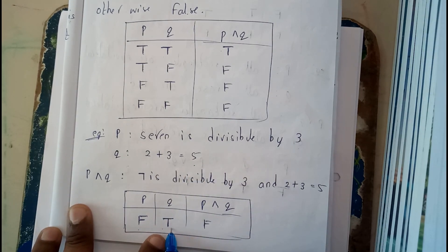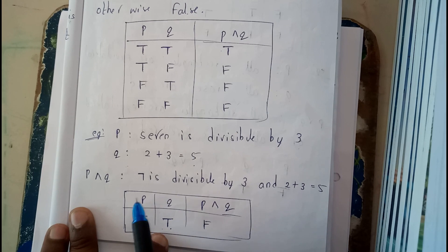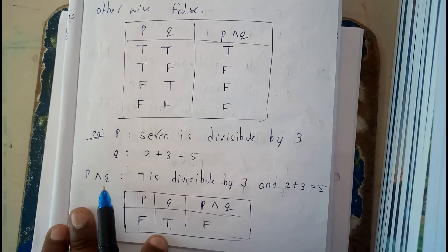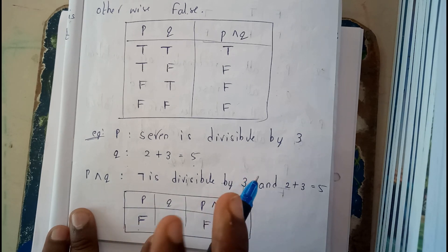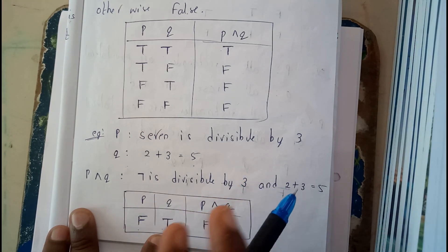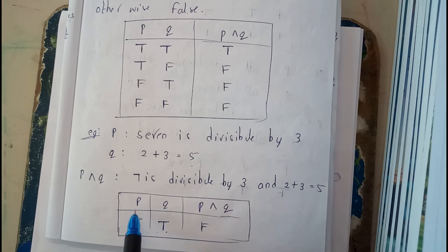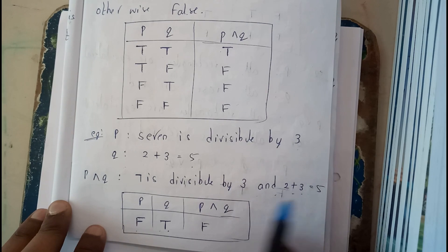When applying conjugation between P and Q, you join them with 'and'. So, seven is divisible by three and two plus three equals five. P is false, Q is true, so P conjugate Q - one of them is false.